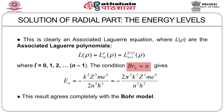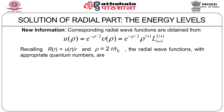The condition Br₀ = n gives the energy levels because B contains the energy. So the discrete energy levels can be immediately written down — this result agrees completely with the Bohr model. The new information is that the corresponding radial wave functions can be obtained from U(ρ) = e^(−ρ/2)·V(ρ), which turns out to be e^(−ρ/2)·ρ^(L+1) times the Laguerre function.